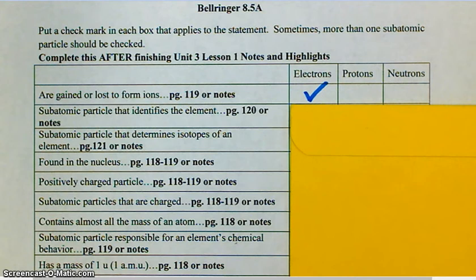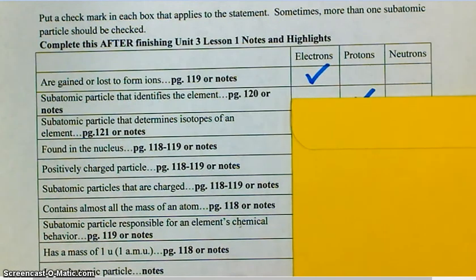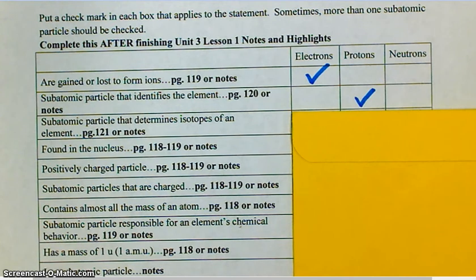All right, the next clue says subatomic particle that identifies the element. Which one is that, guys? Protons, and only protons. It is only protons that identify the element. The number of neutrons doesn't matter as far as identifying the element. The number of electrons doesn't matter. Only protons. Subatomic particle that determines isotopes of an element. Neutrons. Very good.